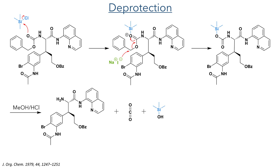Having served its purpose, the CBZ group was then removed. TMS chloride first reacts with the carbonate activating the oxygen and making it more electrophilic. Iodide then attacks the carbon centre to displace the aromatic ring, and the silylated ester is then reacted with methanol and hydrochloric acid to promote a decarboxylation, producing the target amine.